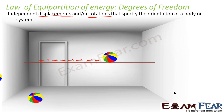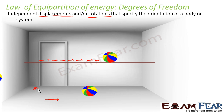Now consider this ball lying on the floor. The floor is basically two-dimensional. The ball can now move along two different directions — lengthwise as well as widthwise. That means this ball has two degrees of freedom when moving in two dimensions. Similarly, if I just throw this ball in space — a three-dimensional space — then it has three degrees of freedom.